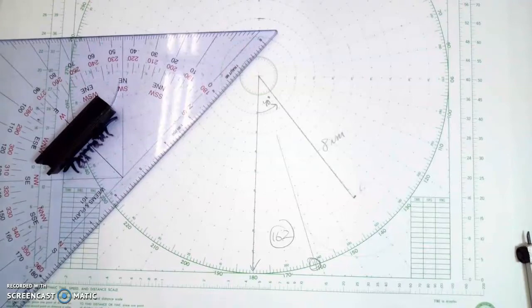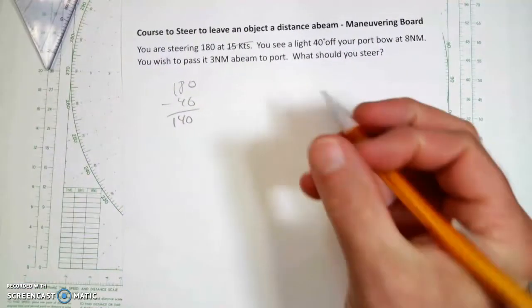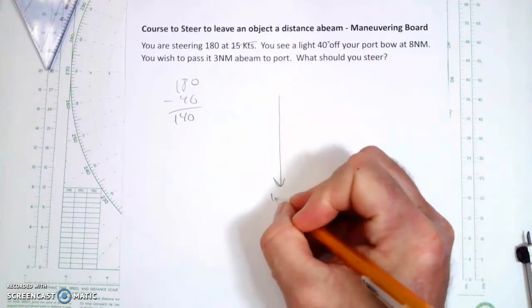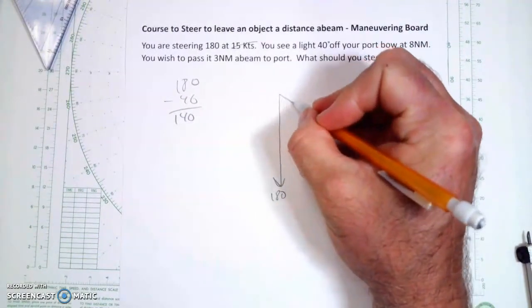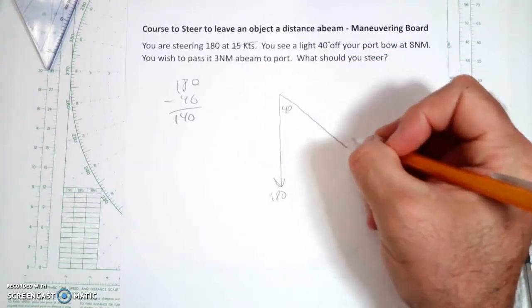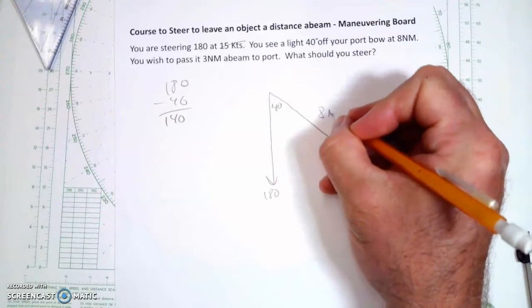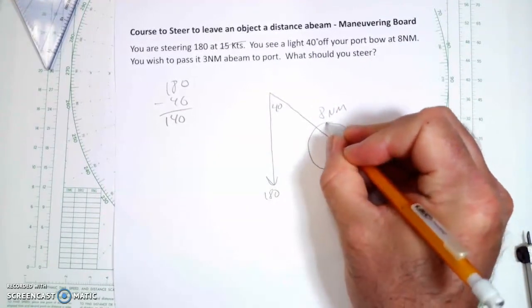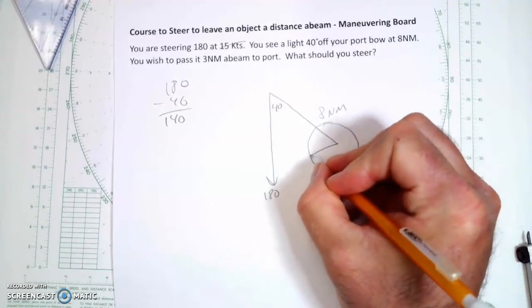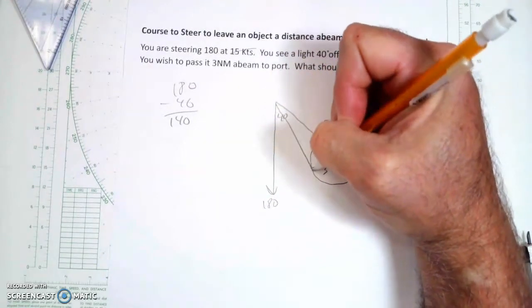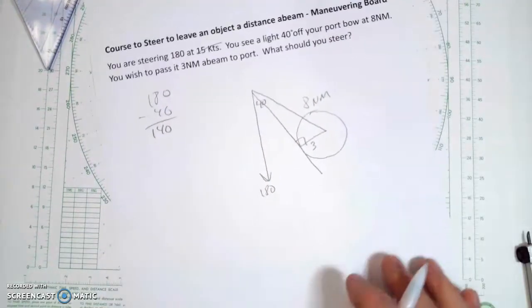Now, if I wanted to, I could have solved this by trigonometry as well. I could just draw a general diagram. The thing is 40 degrees off my port bow, and it's 8 nautical miles away. And now I want to be about 3 miles off. So I draw this over here. That's 3. And when I'm abeam of it, I'm at a 90-degree angle. So there's my 90-degree angle.